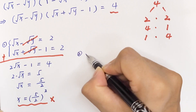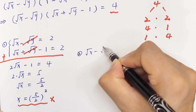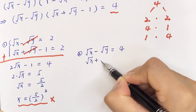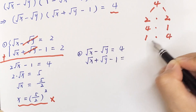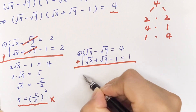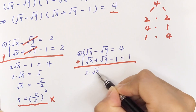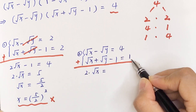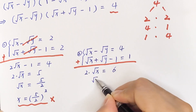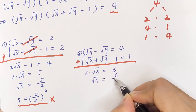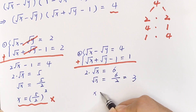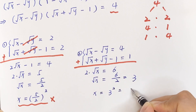For the second case: square root of x minus square root of y equals 4, and square root of x plus square root of y minus 1 equals 1. Adding these gives 2 times square root of x equals 6, so square root of x equals 3, meaning x equals 9.